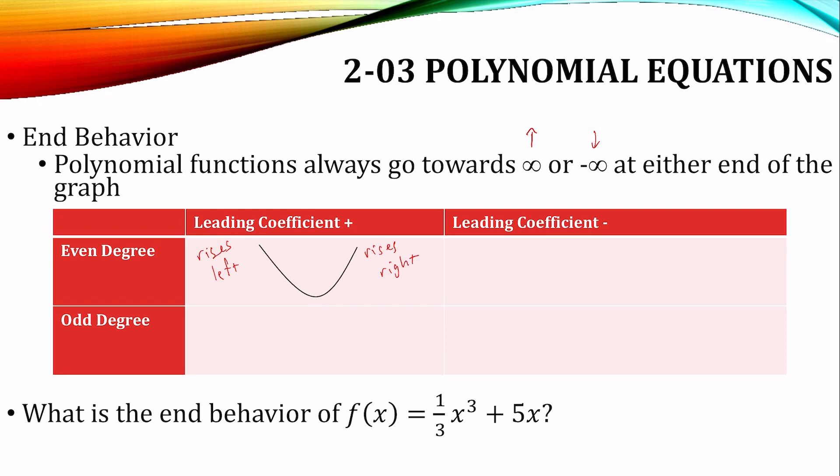If the leading coefficient is negative, then it's upside down. And we'd say it falls left and falls right.